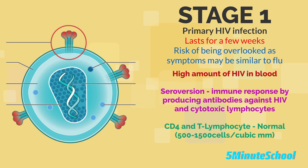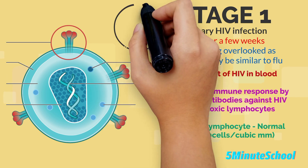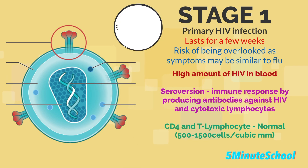At this stage, when doing a blood test, the CD4 cell and T lymphocyte count will be normal — around 500 to 1,500 cells per cubic millimeter. In terms of symptoms, apart from the initial flu, there are generally no other symptoms, but there may be some swollen lymph nodes.